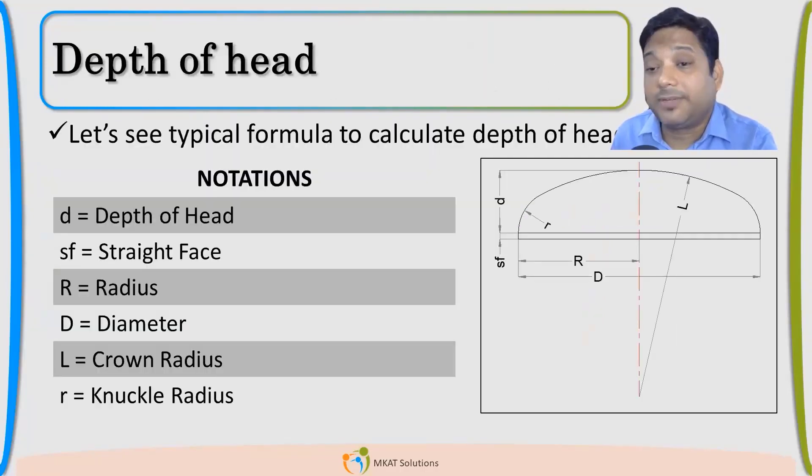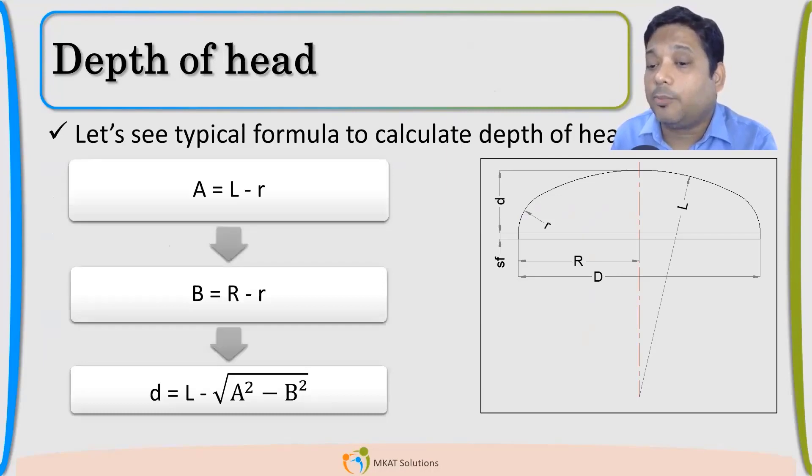Now, we need the line of support, right? So we need the depth. This is a formula with which you can calculate depth of any region. For elliptical, we know it's D by 4, right? But what about tourispherical? What about if any other tourispherical which is not ASME with different knuckle and spherical? This formula you can use for any type of shape. This is a very useful formula. You can note it down. Any kind of descent, you will be able to get the depth with this formula.